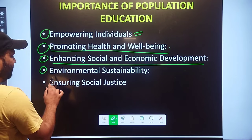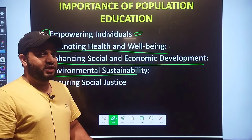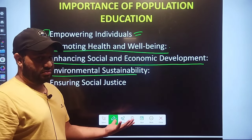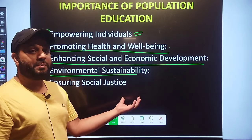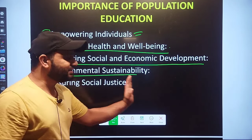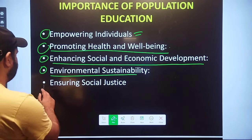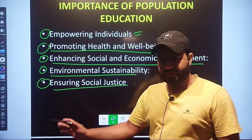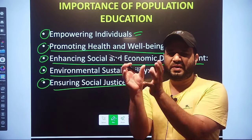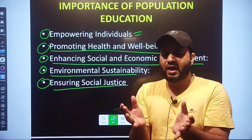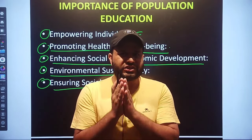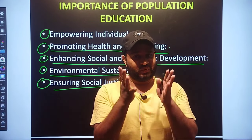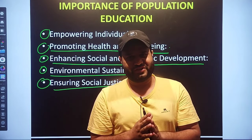The third importance is Environmental Sustainability — we discussed this just now. Population education will help us in achieving environmental sustainability. And another is Ensuring Social Justice — we were talking about human rights. These are repeated terms, so understanding one topic will automatically build your concept on another. I hope this is clear. You have understood the important points to remember when discussing the objectives and importance of population education.